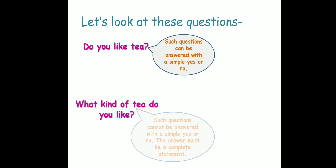For the second question, such questions cannot be answered with a simple yes or no — the answer must be a complete statement. For the question 'What kind of tea do you like?' — if somebody asks you that, will you say yes or no? No, you cannot. That will not answer the question. For this you have to mention the kind of tea, like green tea, ginger tea, or cardamom tea. So the answer has to be a complete statement. Suppose I say 'I like ginger tea' — that is a complete sentence. The answer cannot only be yes or no.